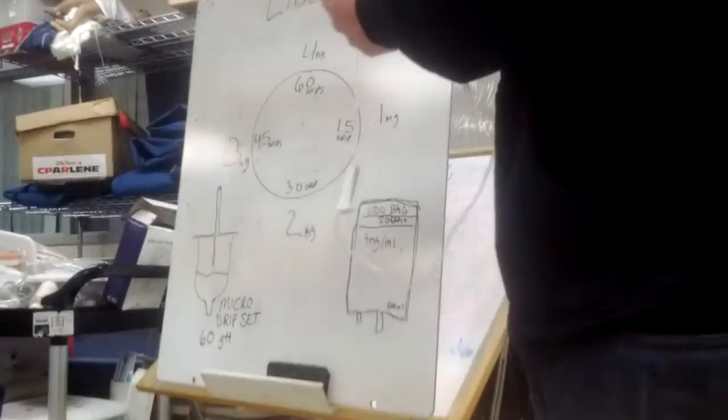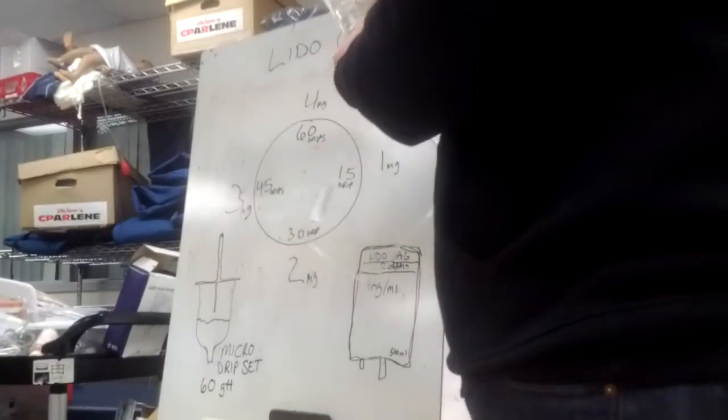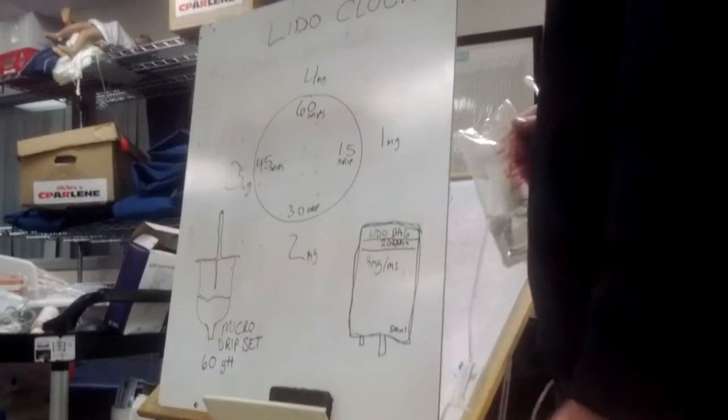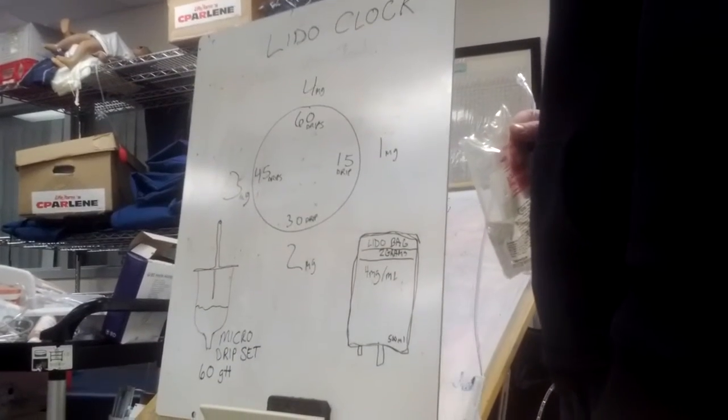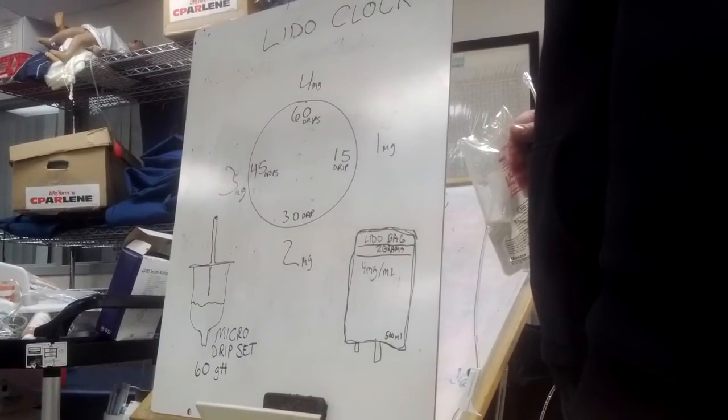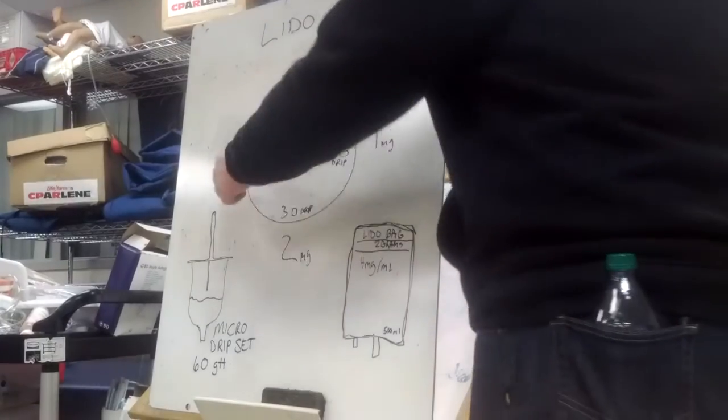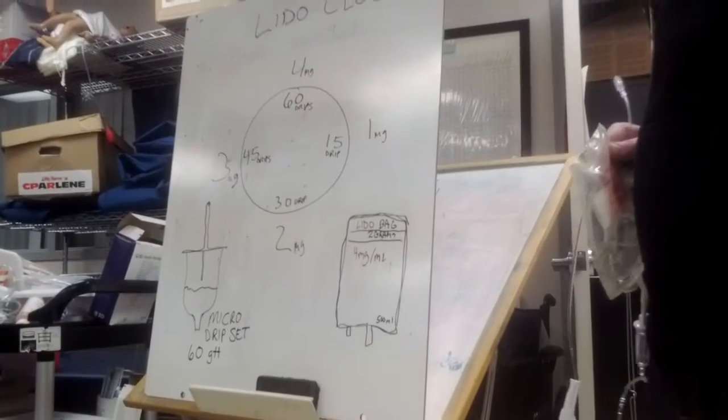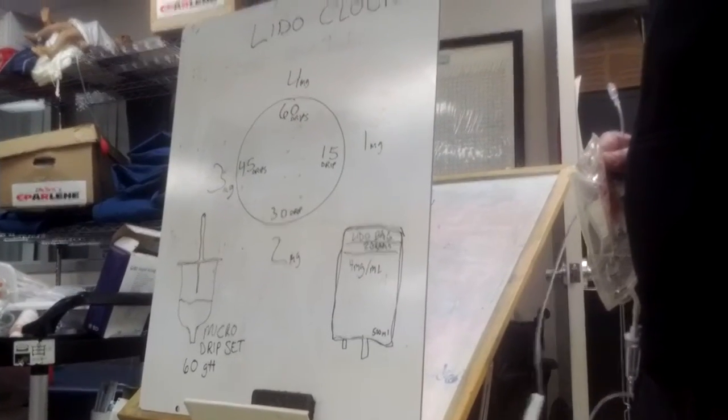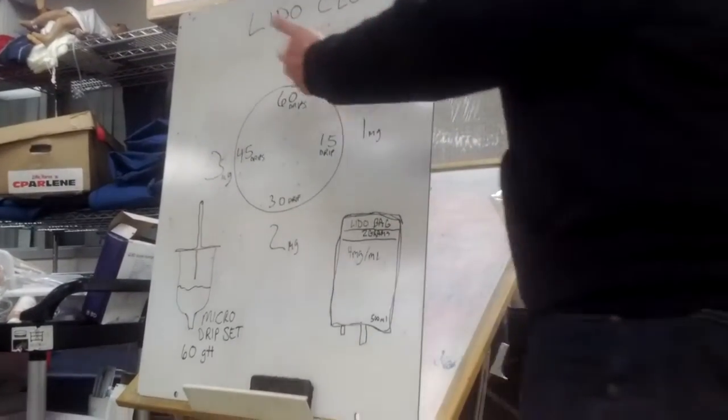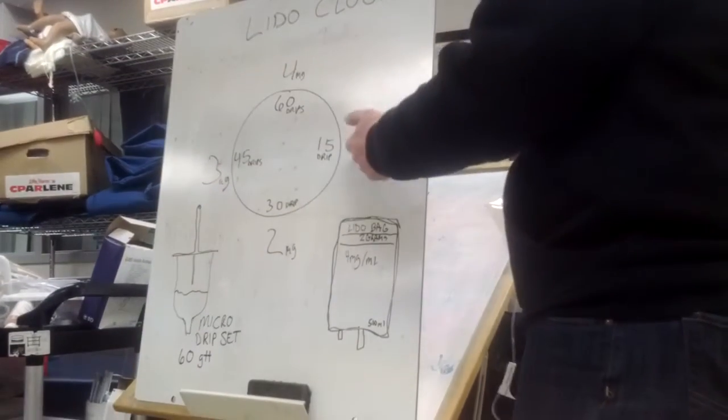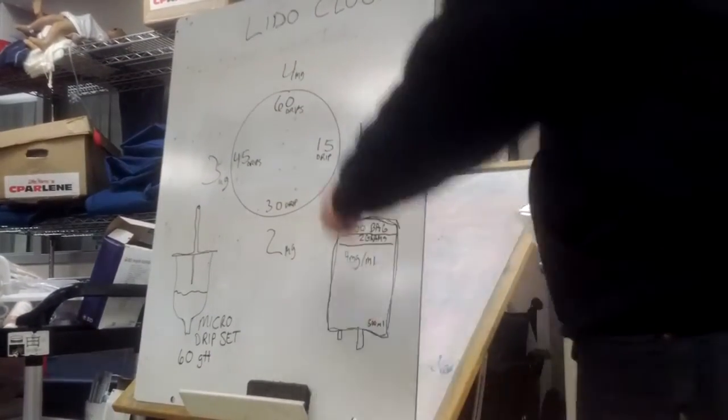It'll be set up like this: bag two grams, 500 ml, 4 milligrams per ml, just like here. They're gonna say either one, two, three, or four milligrams per minute. If we have a clock here - 15, 30, 45, 60 - so for one milligram a minute, it's gonna be 15 drips per minute.